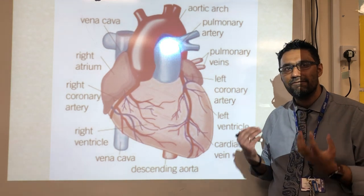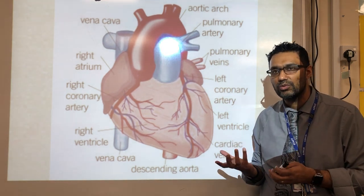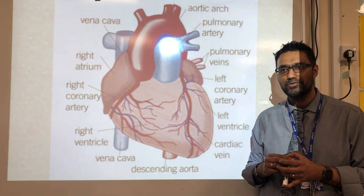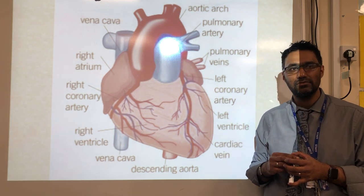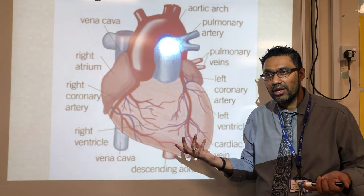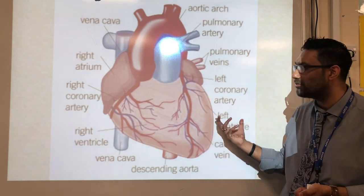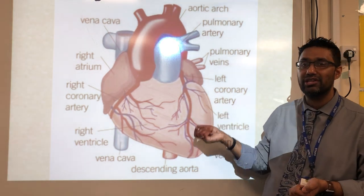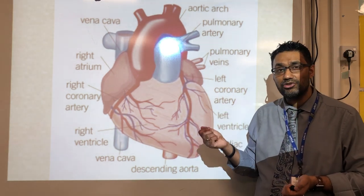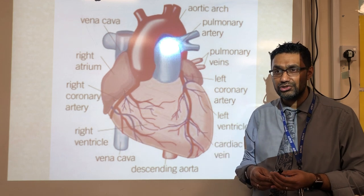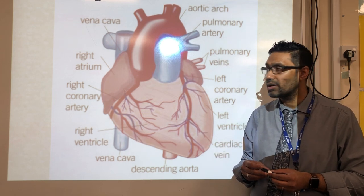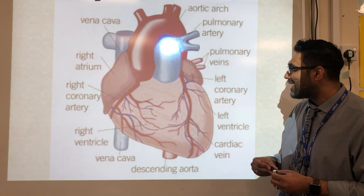What is the primary function — the job — of the heart? To pump blood around the body. That's it. To pump blood around the body so that blood can get to every single cell, transporting glucose and oxygen for aerobic respiration.